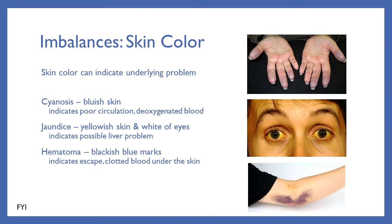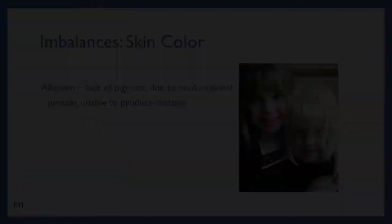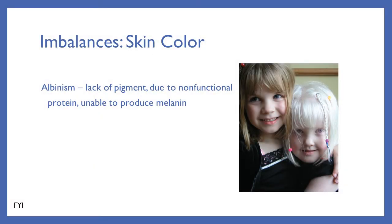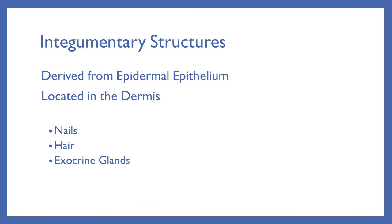Any changes in skin color can be a sign of an underlying problem. Cyanosis is bluish-colored skin, sometimes seen on fingertips, indicating poor circulation and deoxygenated blood. Jaundice is yellowish skin and yellow whites of the eyes, possibly from a liver problem. A hematoma is a bruise — those black and bluish marks from blood underneath the skin. Albinism is a total lack of pigment due to non-functional protein, making the individual unable to produce melanin, so the skin, hair, eyebrows, and eyelashes all lack pigment.